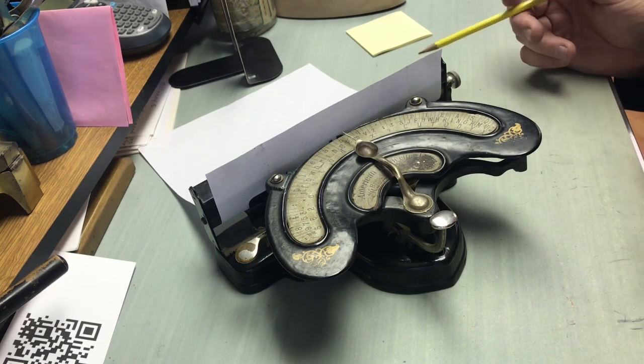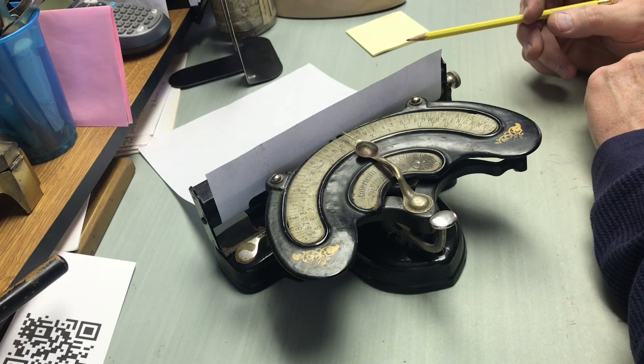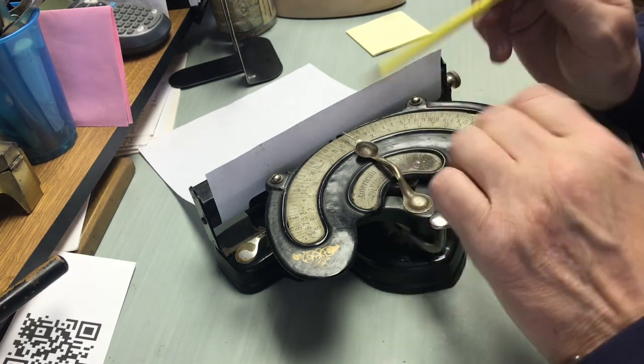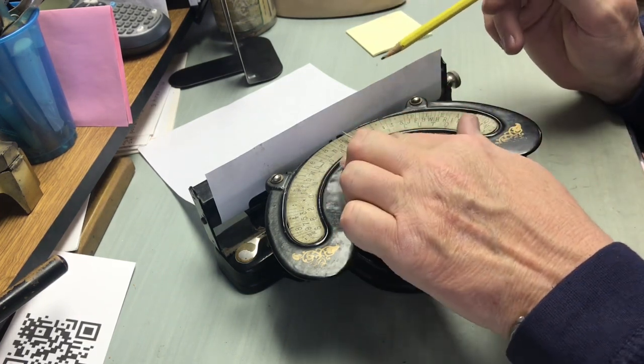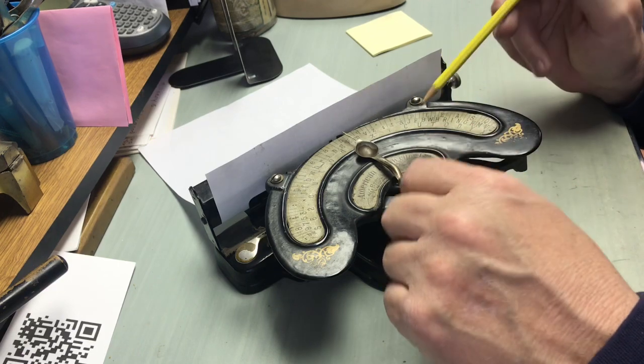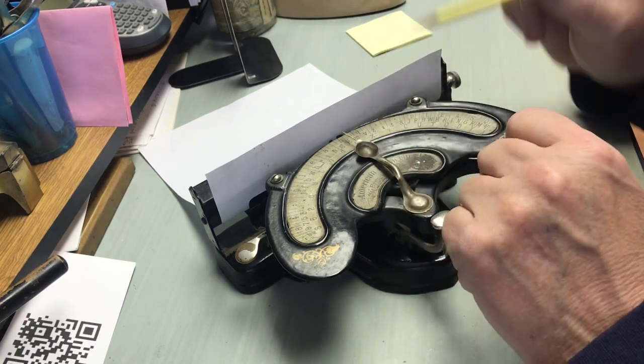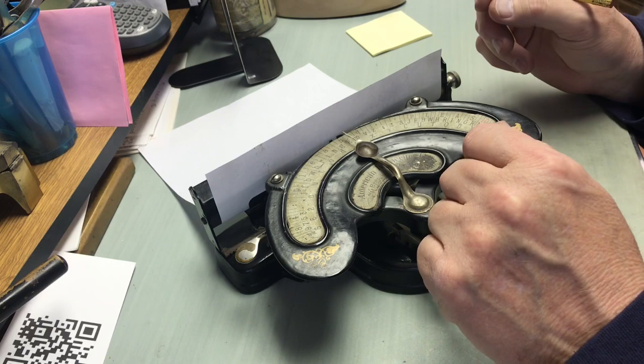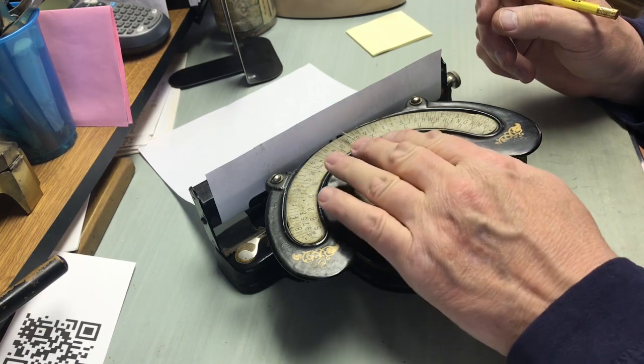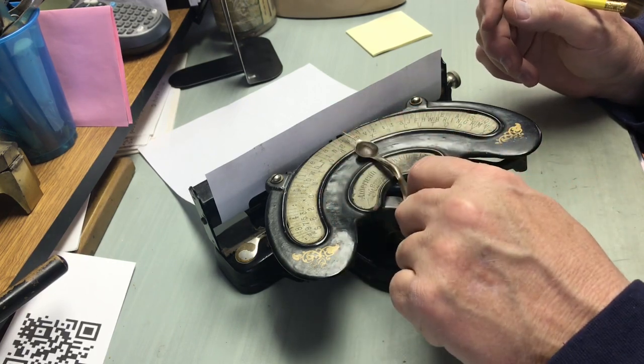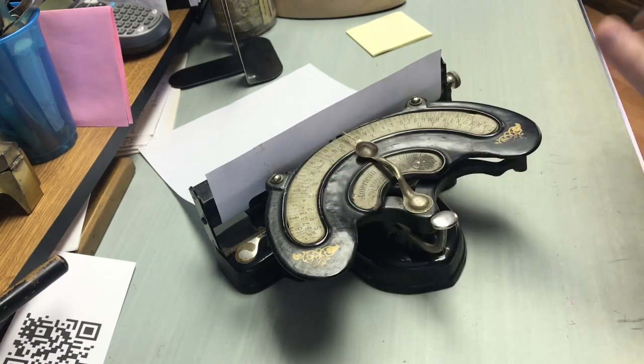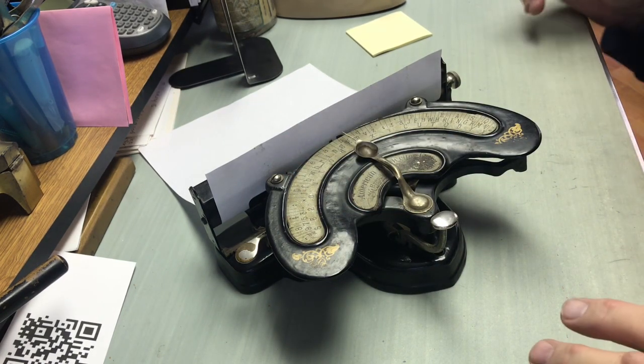This one doesn't appear to be in working order, but the idea is that you would be moving this to whatever letter you wanted, and pressing it down, and that letter would appear there, and it would also advance. And you'd move this to the next letter you wanted to, and you'd press it down. So it was a slow sort of thing. They said if you got good at it, you could get up to 40 words per minute. That's about all I could do on a regular typewriter.